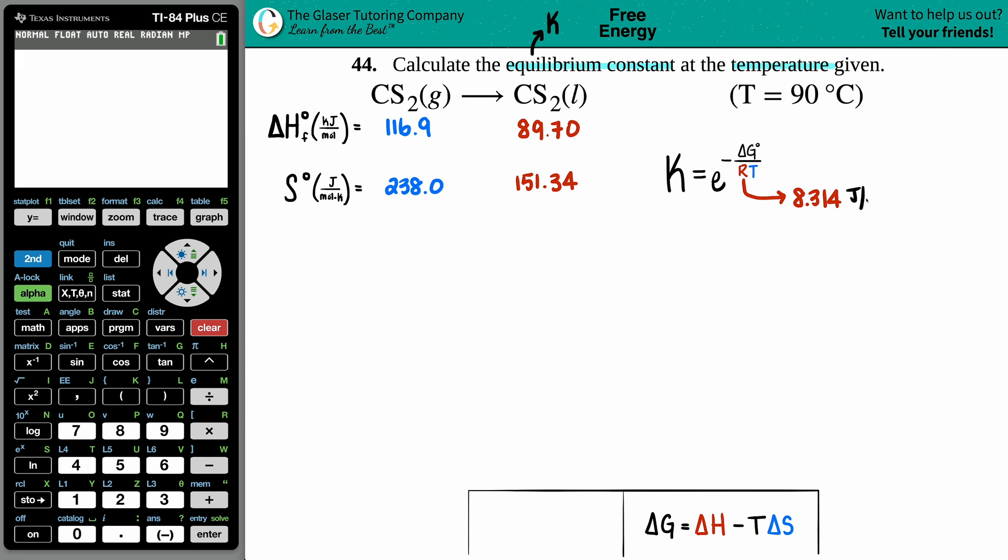8.314 joules per mole times kelvin. These units will help you figure out what units are allowed in this formula. For example, kelvin is only allowed, but they gave it to me in Celsius. So the first thing I have to do is convert the 90 degrees Celsius into kelvin. Celsius to kelvin: plus 273.15.